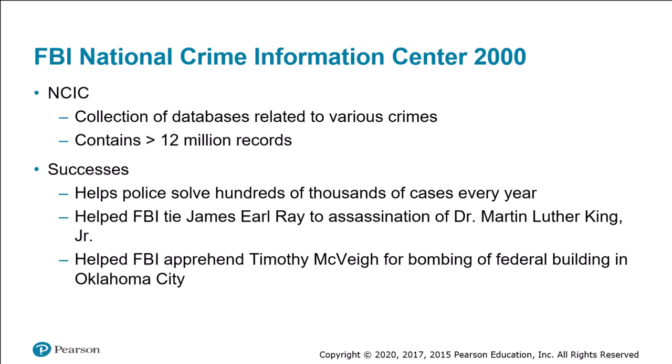The FBI National Crime Information Center, or NCIC 2000, is a collection of databases supporting the activities of federal, state, and local law enforcement agencies in the United States, the U.S. Virgin Islands, Puerto Rico, and Canada. Its predecessor, the National Crime Information Center, was established by the FBI in 1967 under the direction of J. Edgar Hoover. When first activated, the NCIC consisted of 356,784 records in five databases containing information about stolen automobiles, stolen license plates, stolen or missing guns, other stolen items, and missing persons.